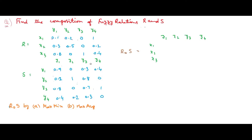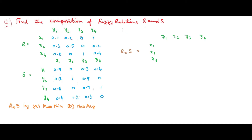Hi friends, in this video we will solve the fuzzy composition by using the max-average method. The problem gives us two fuzzy relations, R and S. We want to find the fuzzy composition using the max-average method, which means we first compute the average and then take the maximum.